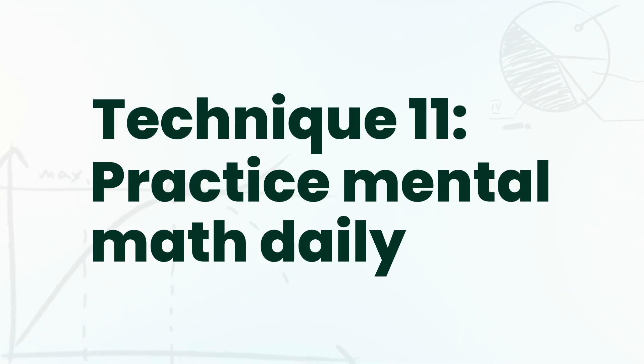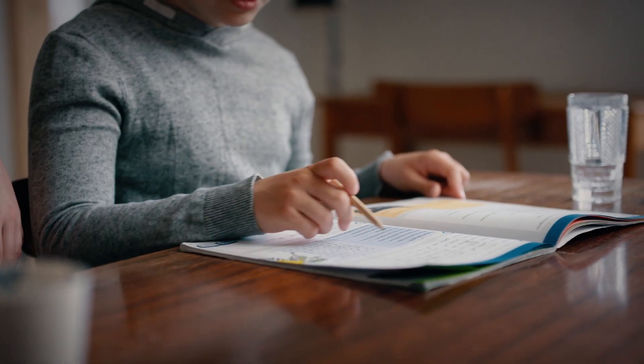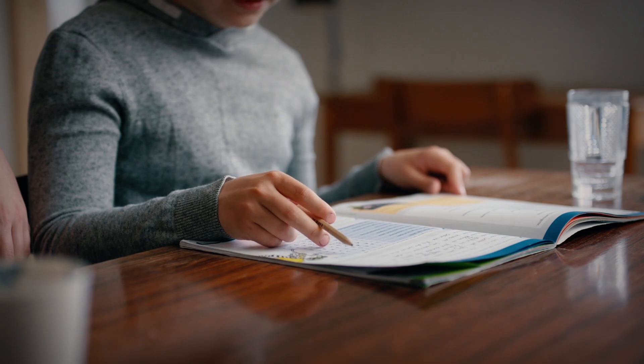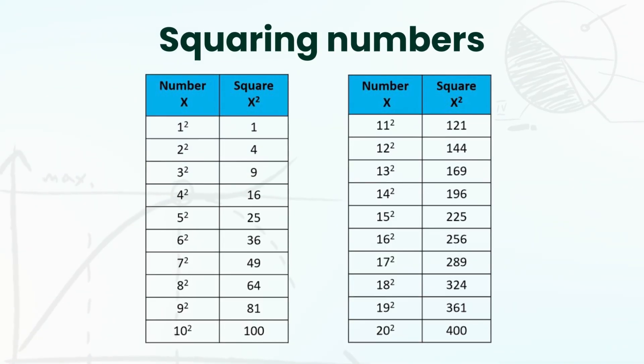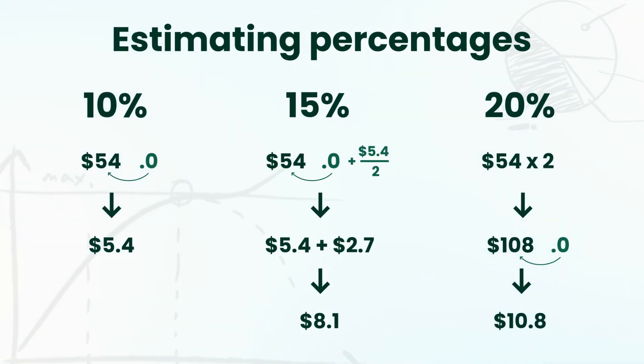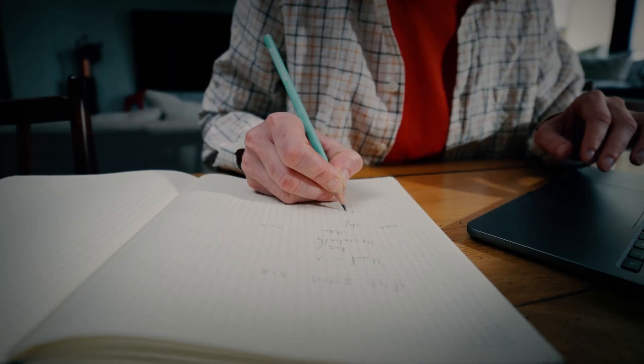Technique number eleven: practice mental math daily. You don't want to always rely on your calculator for very basic math. Make sure to practice your multiplication tables, squaring numbers under 20, estimating 10% or 25%, and working with simpler fractions. This will save you so much time because your brain will automatically know how to solve these quickly without wasting time punching it into a calculator.